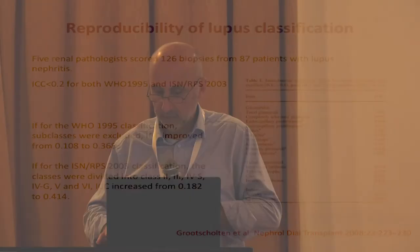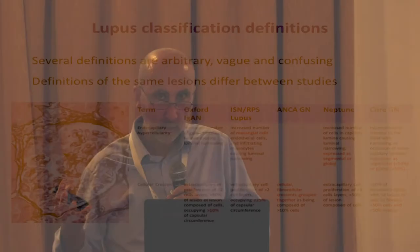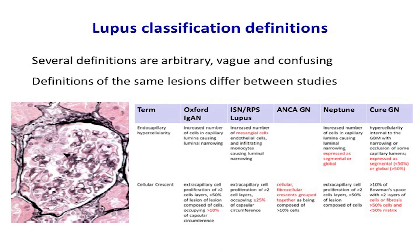Studies looking at the reproducibility of this classification found the ICC for both WHO and ISN-RPS was very poor — less than 0.2 — so pathologists couldn't apply the classification uniformly. When looking at the ICC of individual lesions it was much better, around 0.5 to 0.6 and above. The reason for poor reproducibility was that several definitions were arbitrary, vague, and confusing. The RPS now has a working group examining definitions for lesions across glomerular disease studies, and the same lesion has very different definitions in different studies.